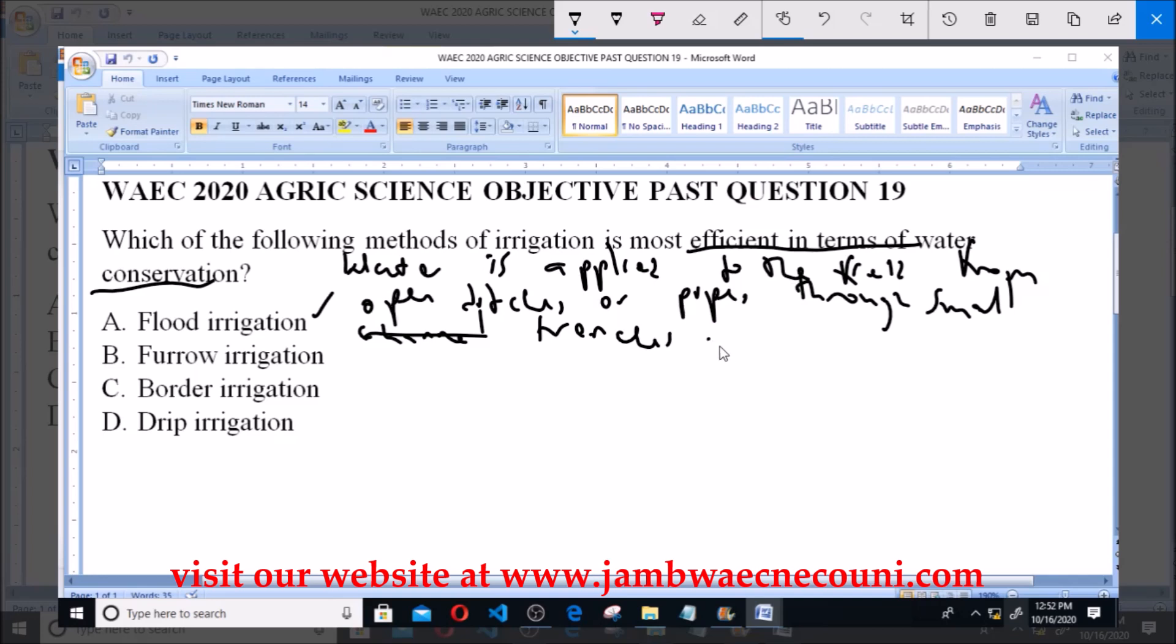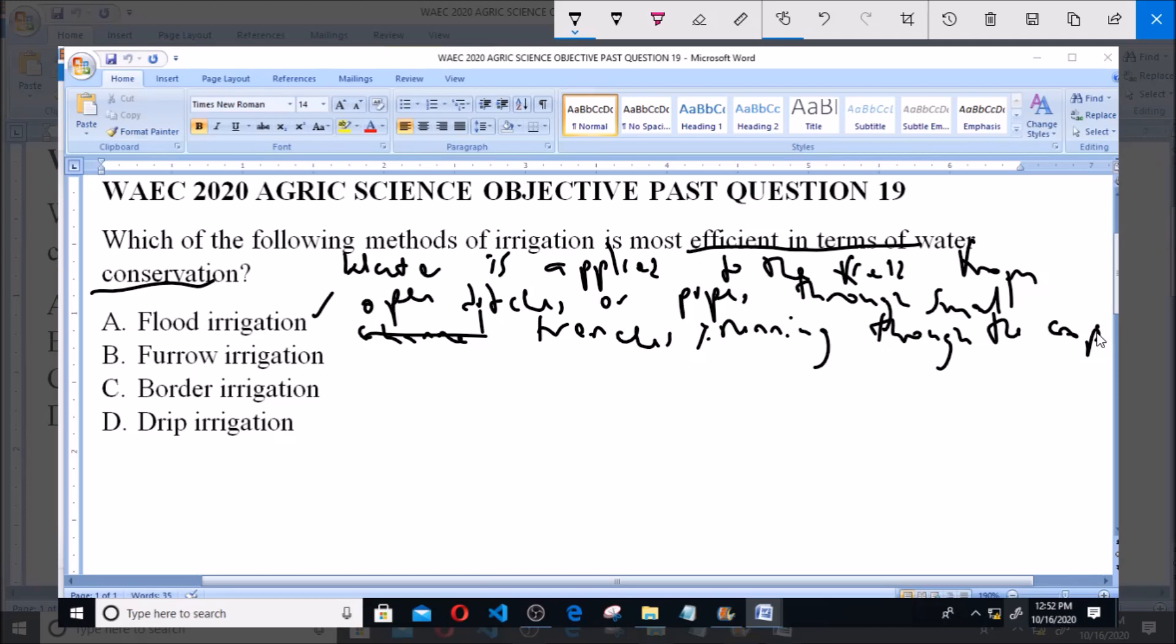Now option B says Furrow Irrigation, and in furrow irrigation water is applied to the field from open ditches or pipes through small channels or furrows. Now in flood irrigation pipes may not usually be used, so just open ditches or trenches.